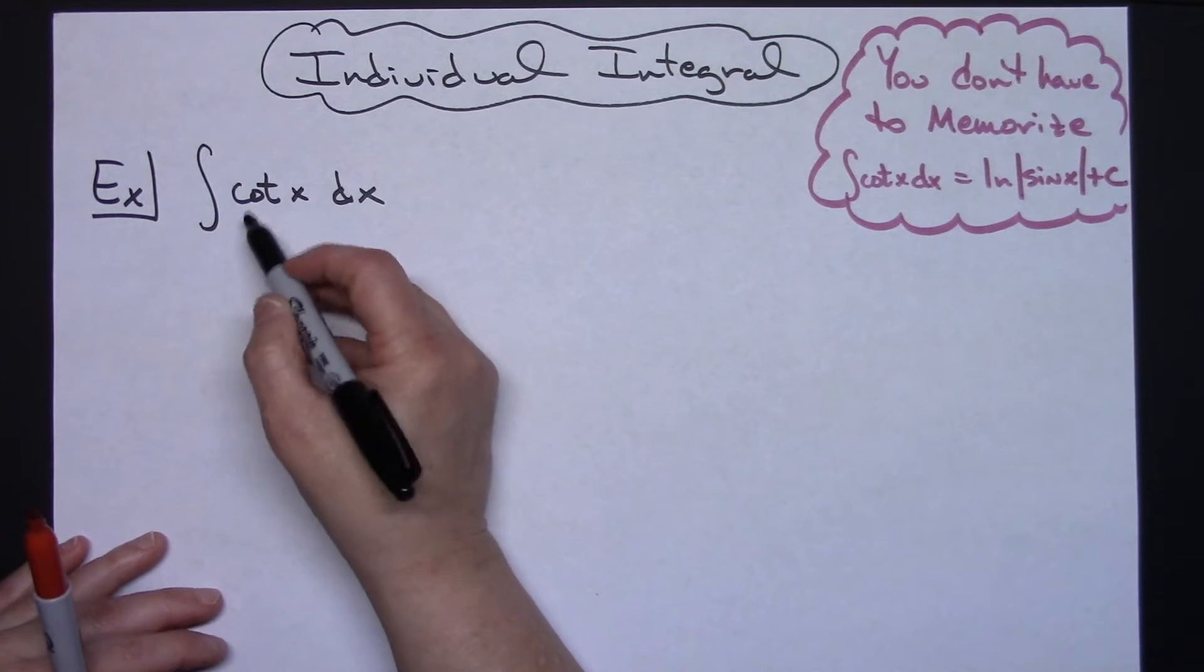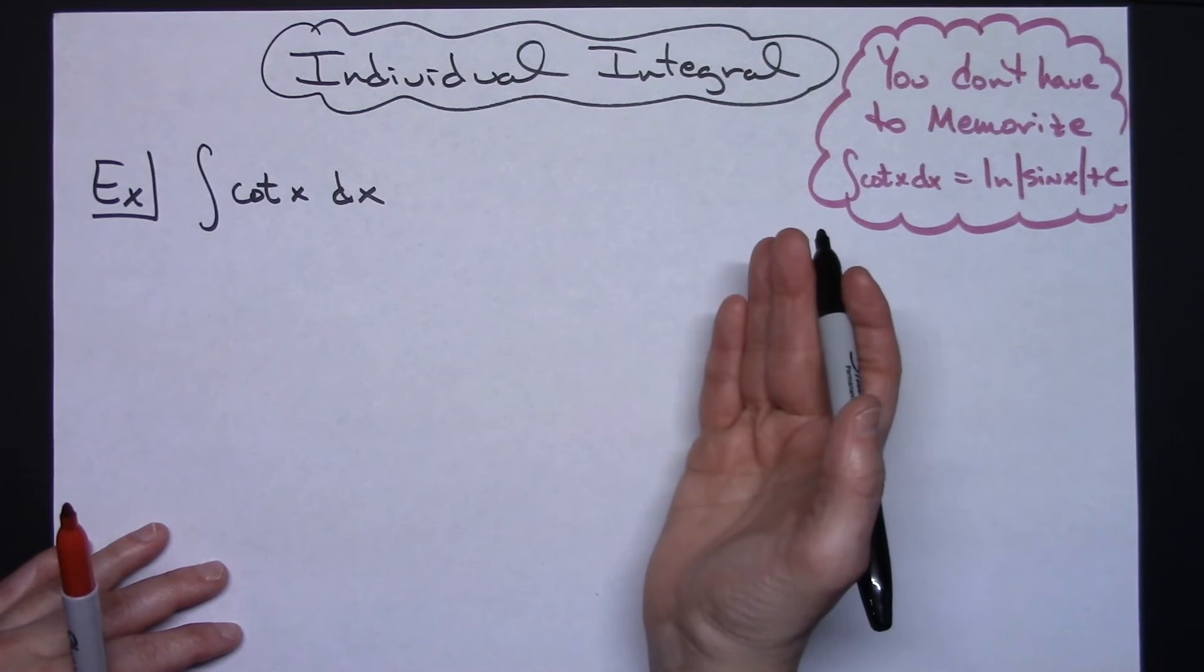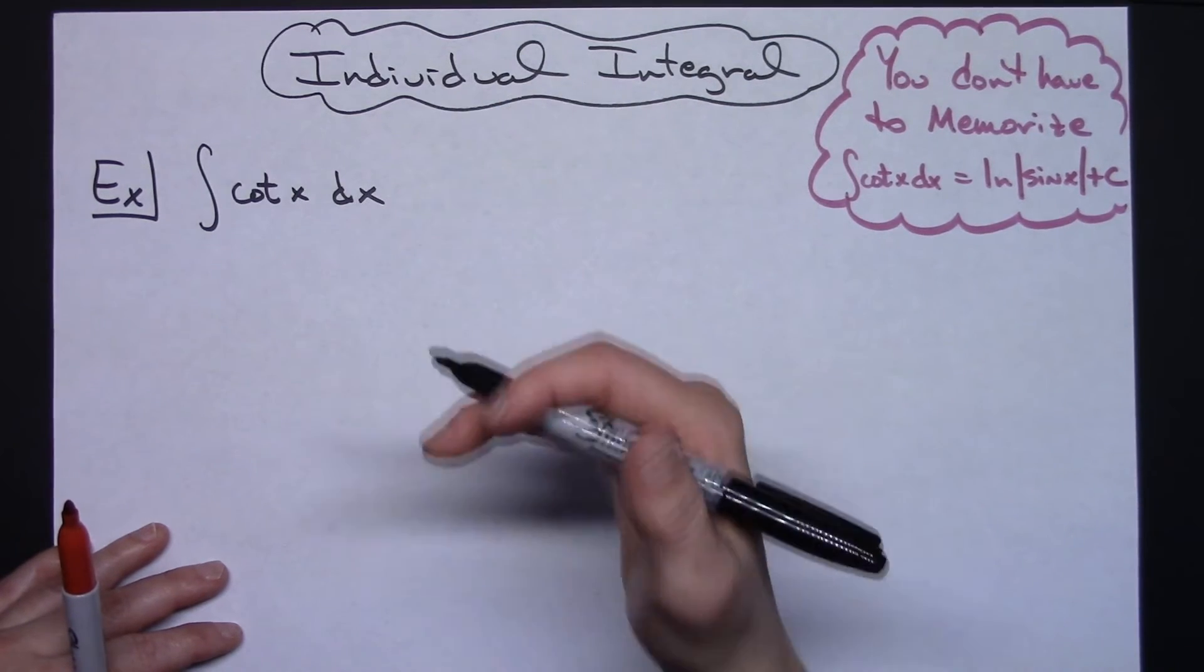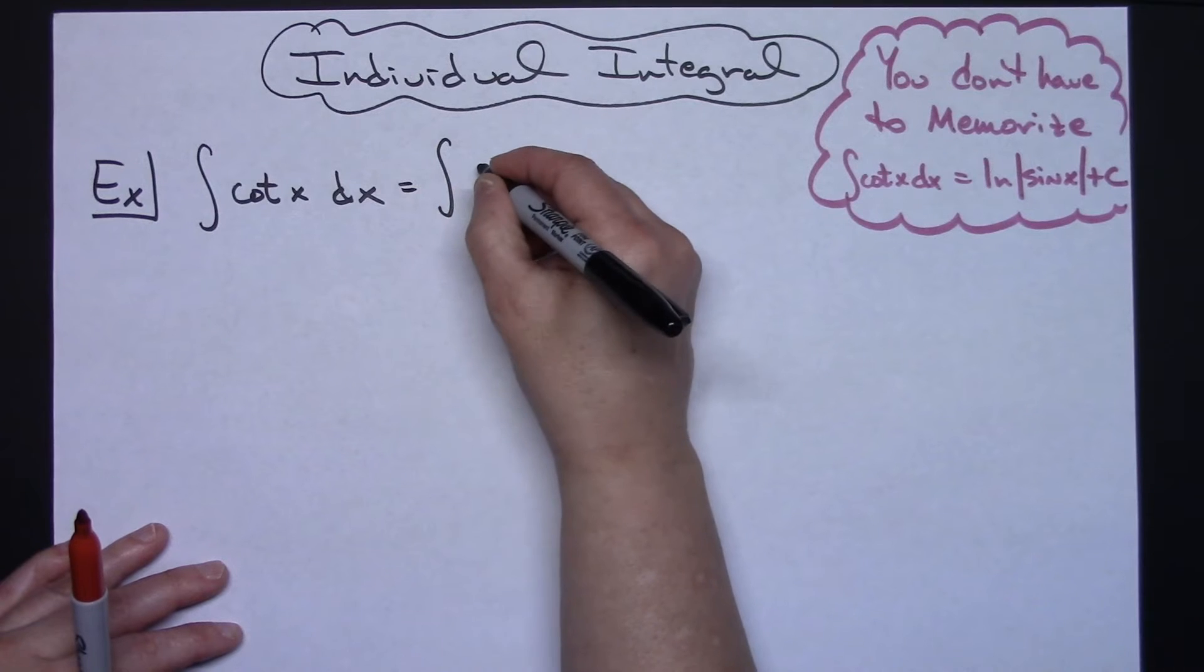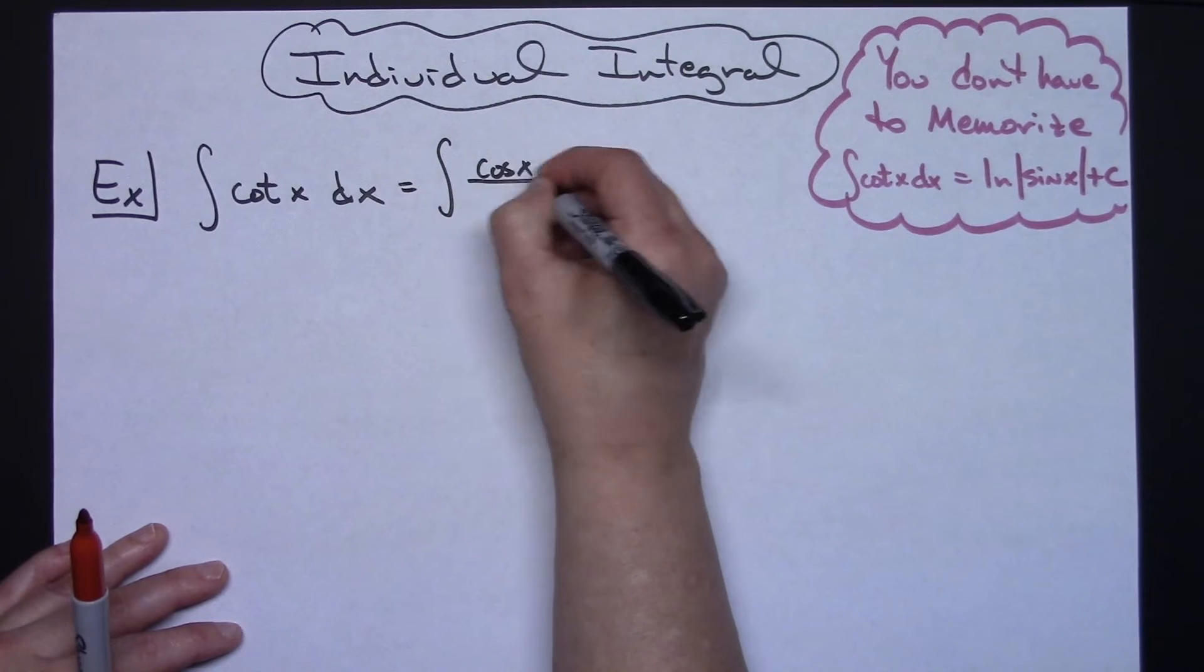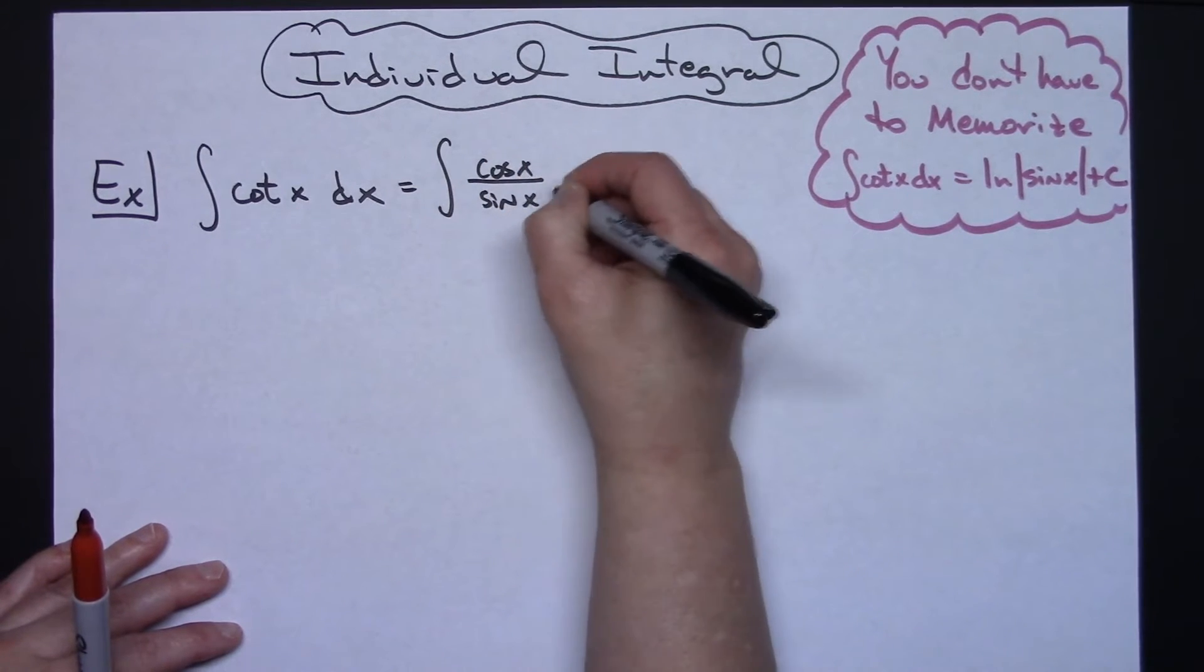First thing you need to do is take a look at that cotangent x and just do your basic trig substitution of cosine over sine. So then I'm going to have the integral of cosine x over sine x dx.